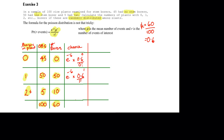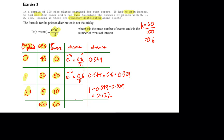If we work out e to the minus 0.6, that's 0.549. Times 0.6 to the 0 divided by 0 factorial — that's 1 — gives us 0.549. The next will be 0.549 times 0.6 to the power of 1 divided by 1 factorial, which gives 0.329. The last value we'll get by subtraction: 1 minus 0.549 minus 0.329 gives us 0.122.